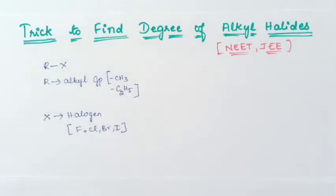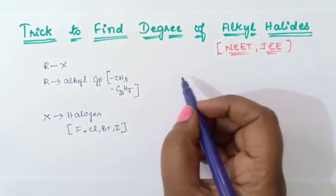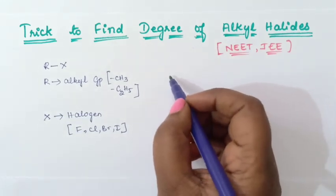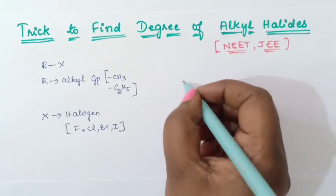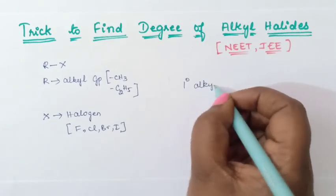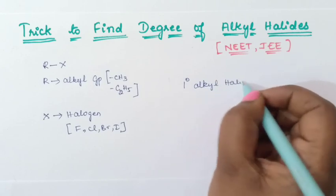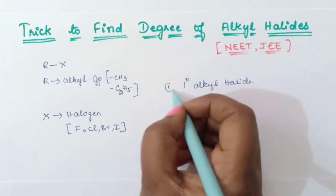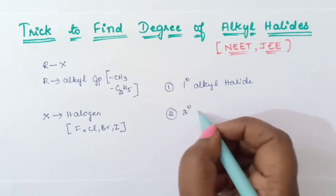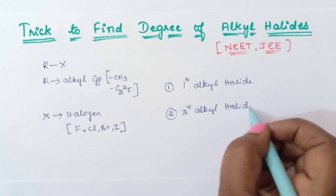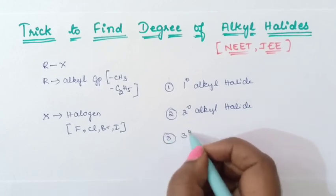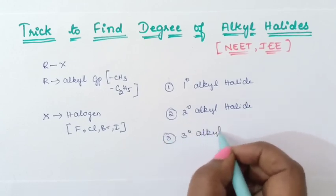Now coming to the degree of alkyl halide, there are 3 types. The first one is called primary alkyl halide. The second one is secondary alkyl halide. And the third one is tertiary alkyl halide.